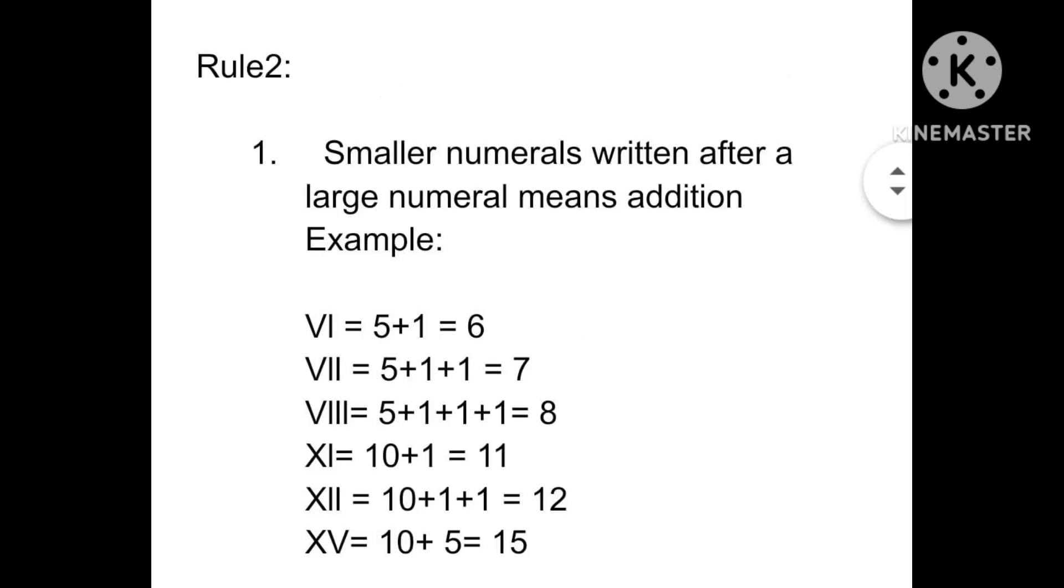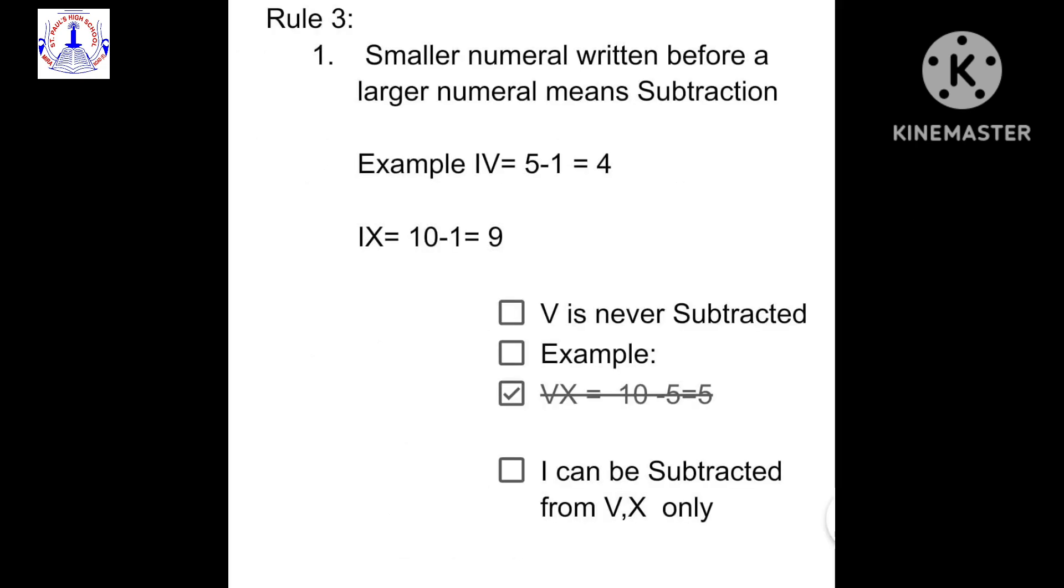Rule number 2: smaller numerals written after a larger numeral means addition. And rule number 3 says, smaller numeral written before a larger numeral means subtraction. So, V is never subtracted. I can be subtracted from V and X only.